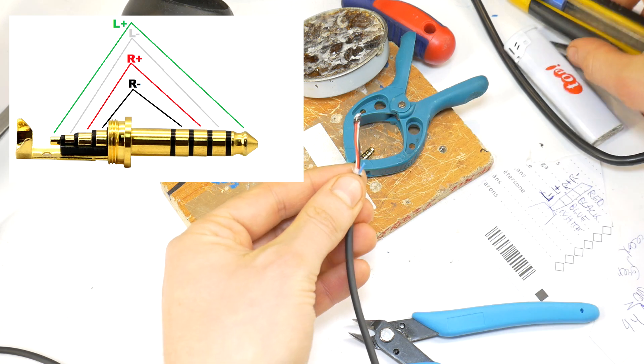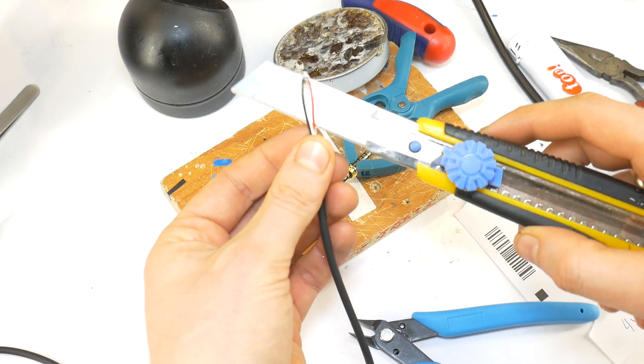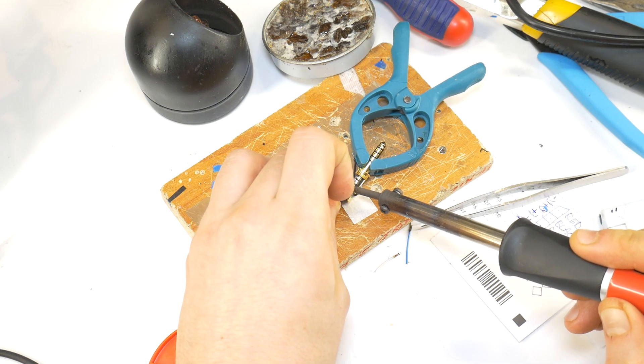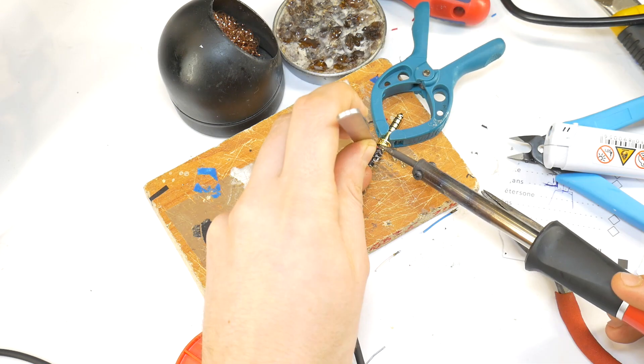Before soldering the wires, cut each wire to the appropriate length for the contact it will be soldered to. Once the first wire is soldered, press the cable with a metal clamp. Solder the remaining wires to the jack contacts.